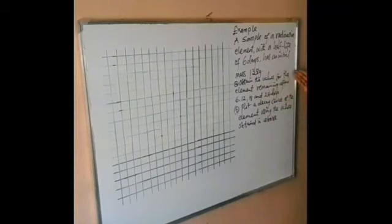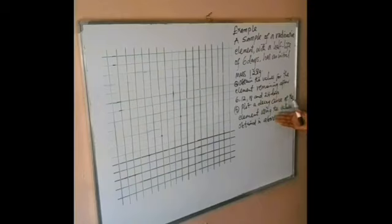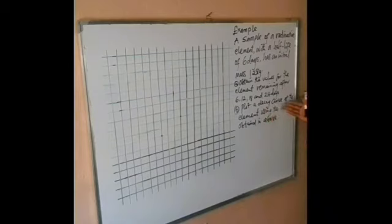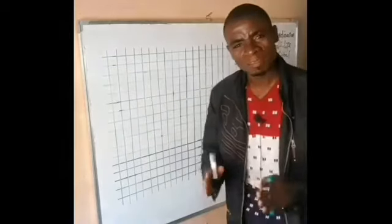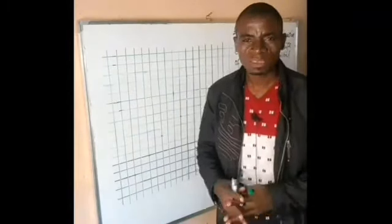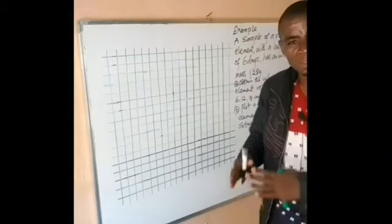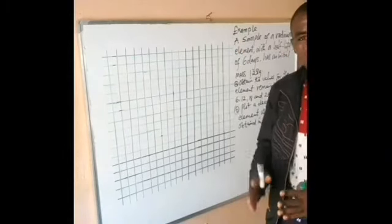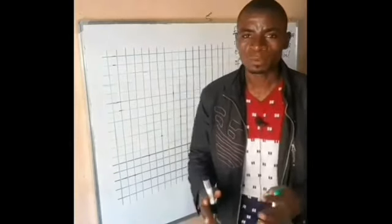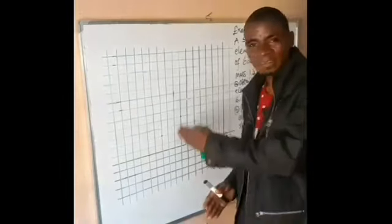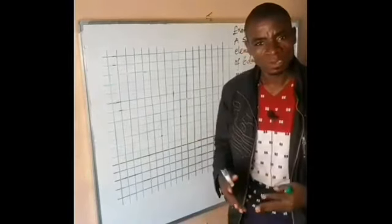Part A: Obtain the values for the element remaining after 6, 12, 18 and 24 days. Part B: Plot a decay curve of the element using the values obtained in part A. To answer Part B successfully, we need to first answer Part A. We are going to answer Part A in the form of a table, so that we can use that table to answer Part B.